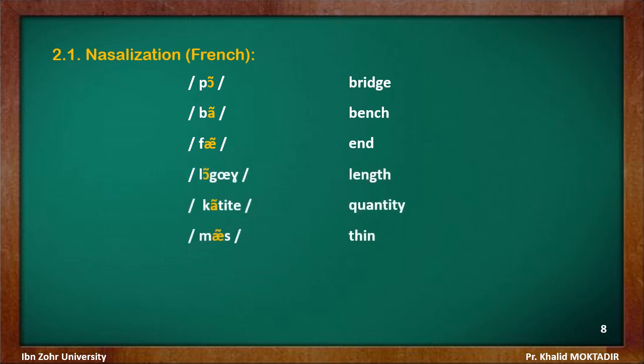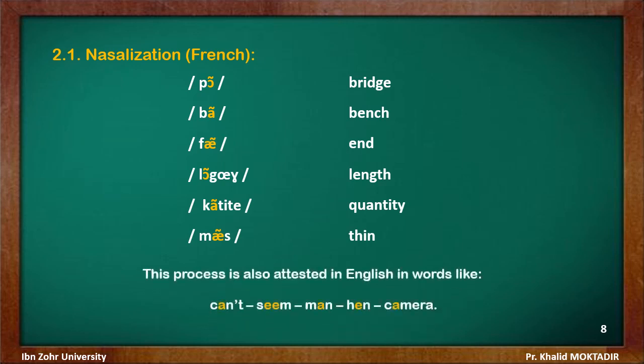When the nasalized vowel is followed by another consonant, in words like longueur, quantité, and masse, notice that the nasal is not articulated — it is absorbed by the vowel, which becomes nasalized. This process also happens in English in words like can't, seeing, man, hand, and camera. For example, without nasalization it would be 'camera,' but with nasalization it becomes 'camera' — you can hear the difference.